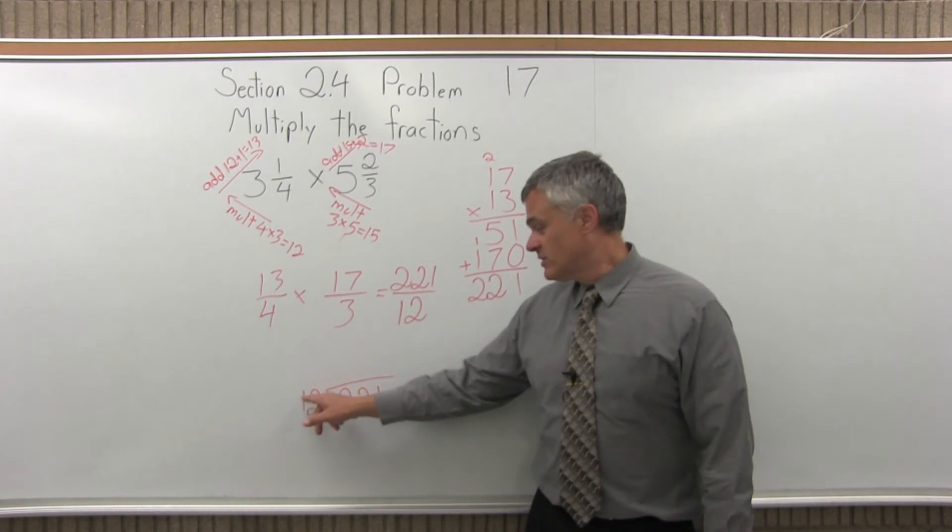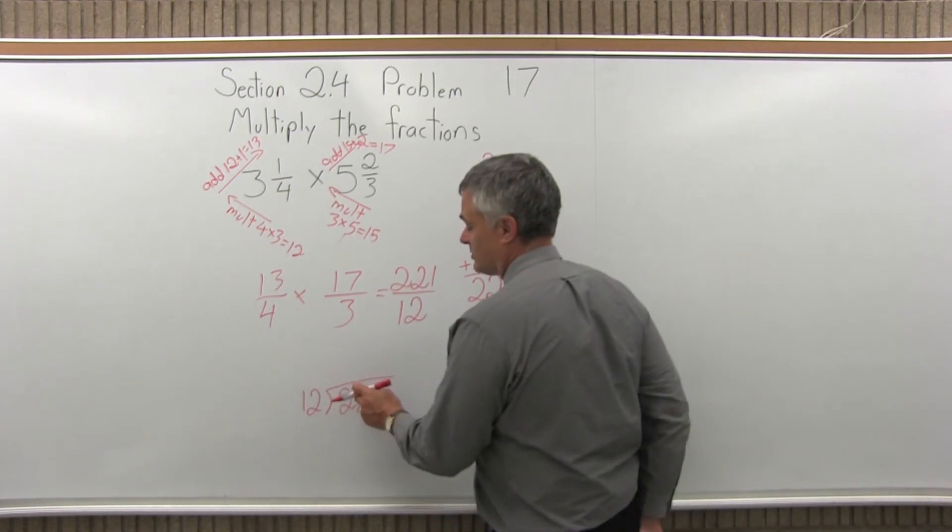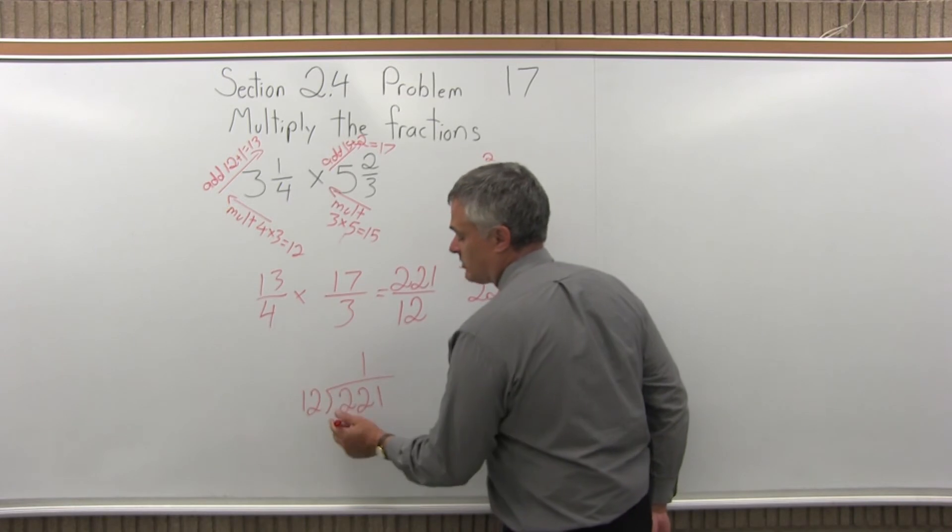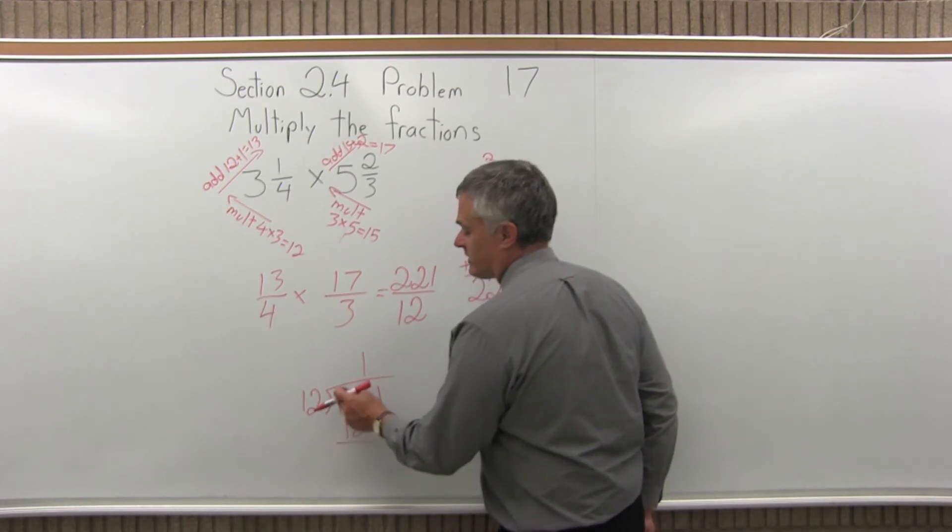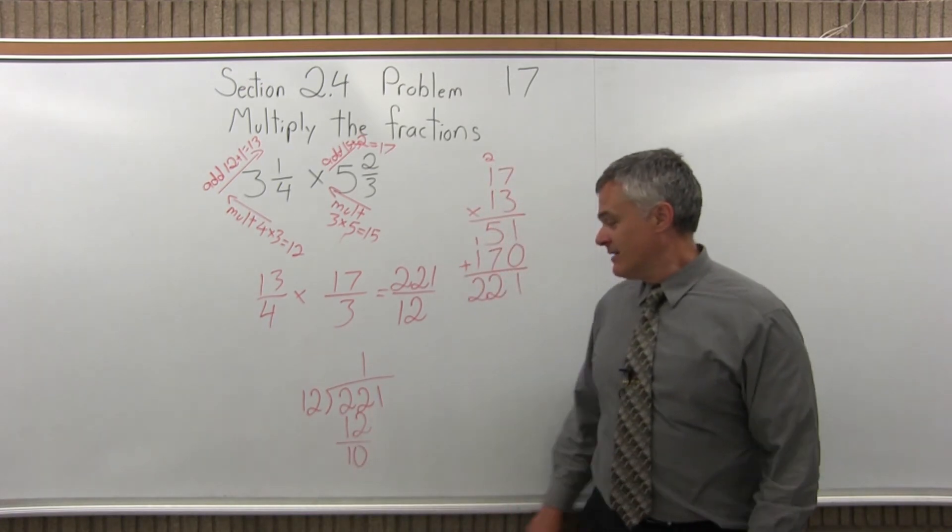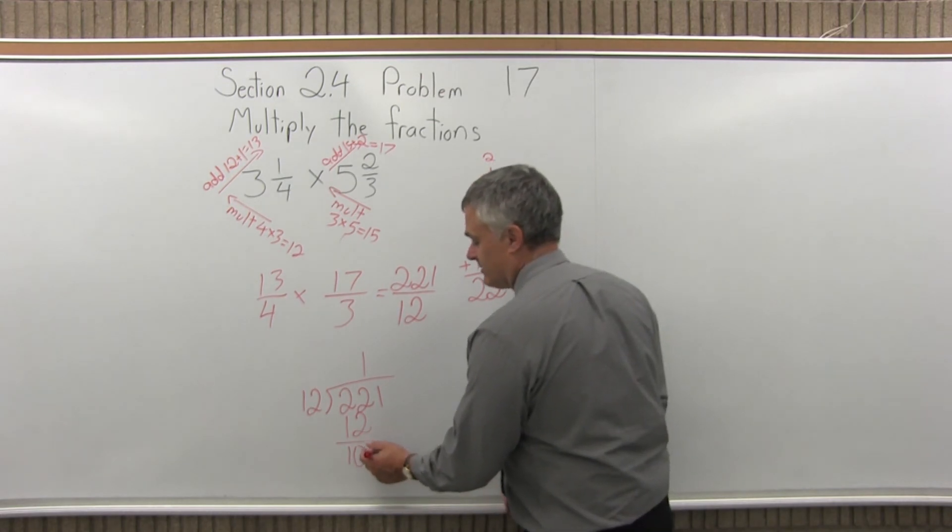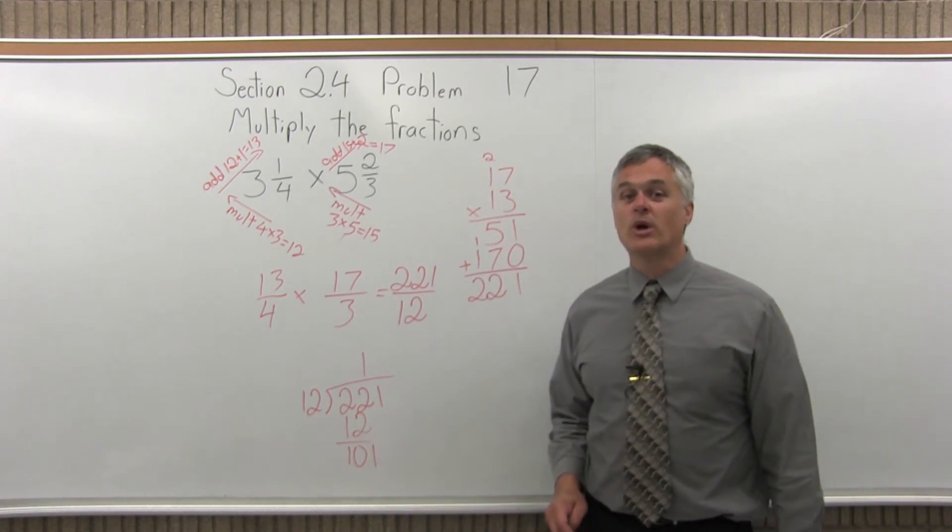12 goes into 22, it'll go in one time, almost twice, because 12 times 2 is 24, won't quite fit in twice. Fits in once. 1 times 12 is 12. Now I will subtract. 22 minus 12 is 10. And now I'll bring down the next digit, bring down the 1, put it after the 10. So 10 with a 1 after it is 101.